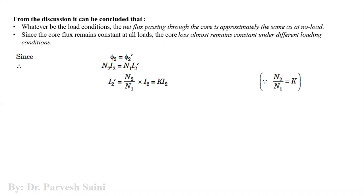From this discussion, phi2 is produced by the ampere turns of the secondary winding — n2 times i2 — and phi2-dash countering the secondary flux is produced by the primary winding turns and the additional primary current. Using this, we can derive that i2-dash equals k times i2, where k equals n2 divided by n1.